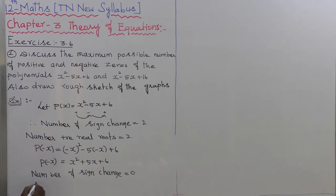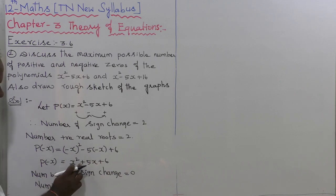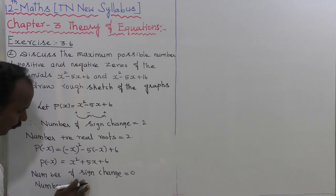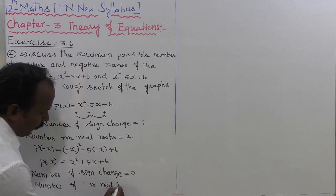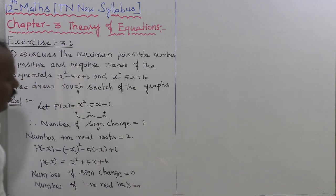Since all terms in p of minus x are positive — plus, plus, plus — there is no sign change. Therefore, the number of negative real roots is equal to 0. The analysis of the first polynomial p of x is completed.